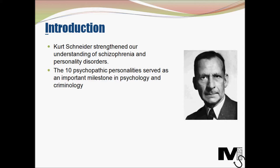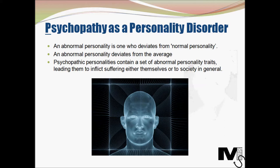According to Snyder, a person with an abnormal personality is one who deviates from normal personality. By normal, what Snyder meant was an average of the range of personalities demonstrated by the population. We've previously looked at Allport's trait theory on this channel, where we understood what personality traits are. Snyder believed that an average person is a combination of certain personality traits, and most normal people fall within an average of such traits. An abnormal personality deviates from this average.